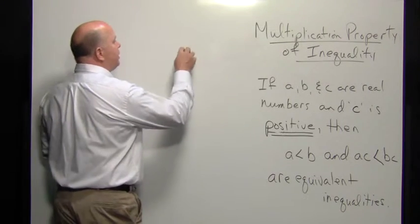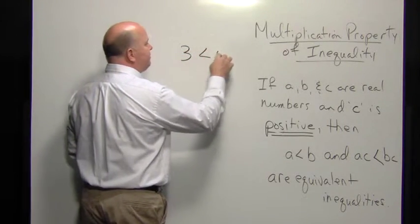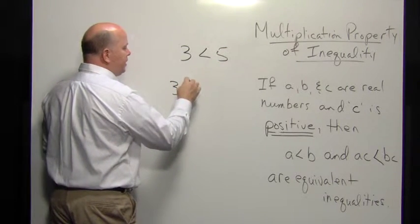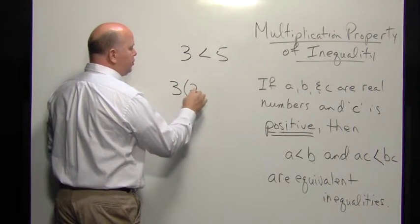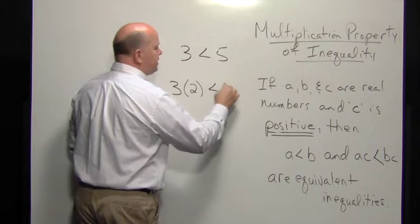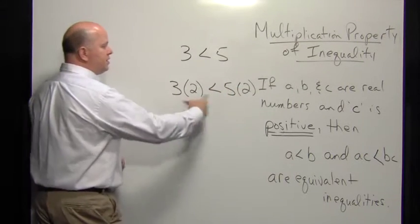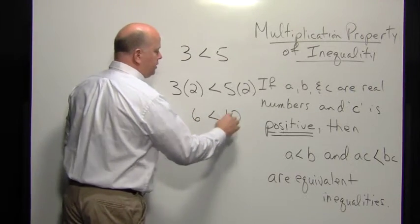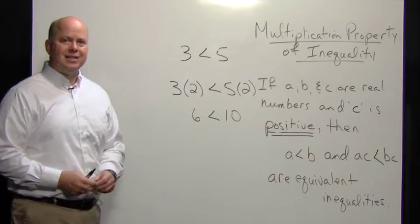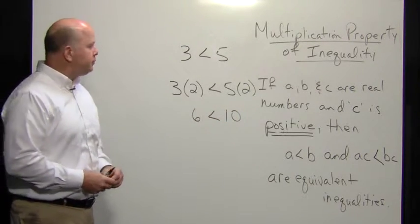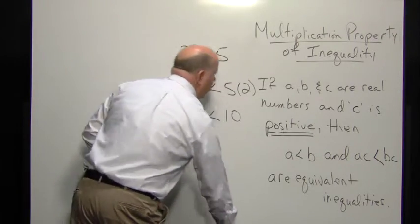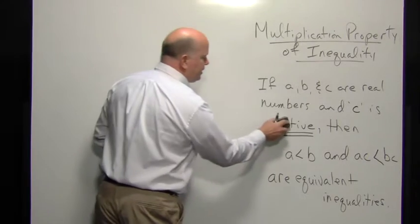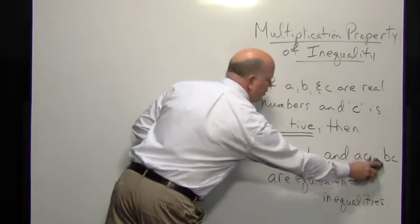For example, if we have three is less than five, which is a true statement, and we take C being two, then this statement will also be equivalent — it will be a true statement. Six is less than ten. Now, what happens when C is not a positive number, but instead C is a negative number?